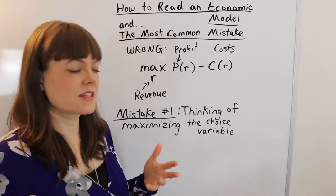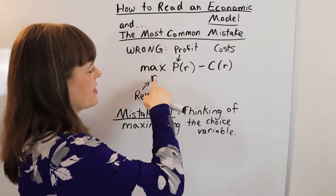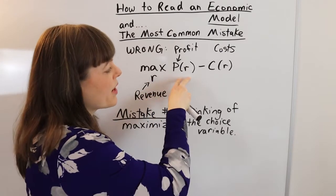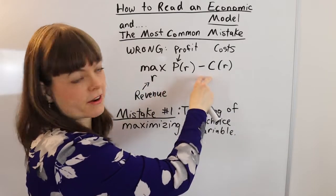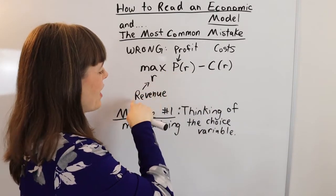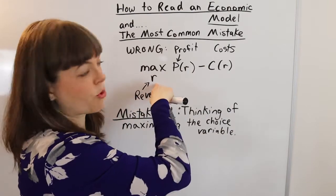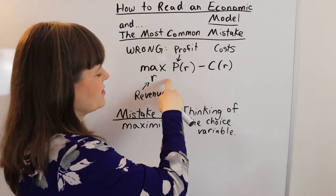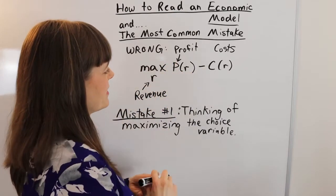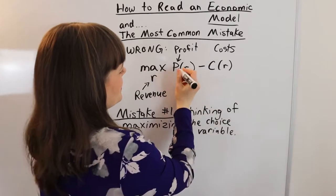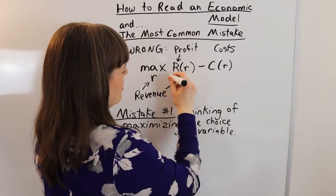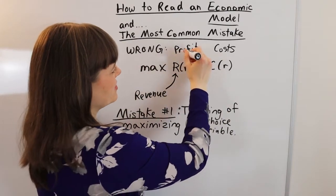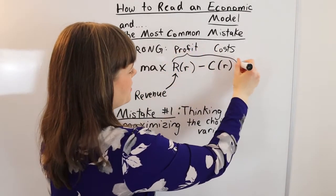How do you fix it? Usually if you've mistakenly done this, whatever you've set up as the thing you want to maximize is going to go into the objective function as a benefit. Revenue belongs in the benefit spot. And of course, profit is revenue minus cost — so that's the whole objective function.